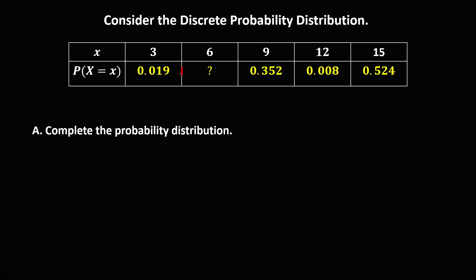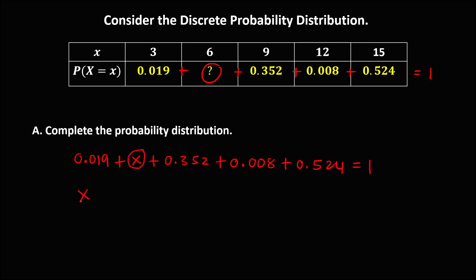Again, the sum of all probabilities is equal to 1. To complete the next distribution, we have: 0.019 plus x plus 0.56 plus 0.352 plus 0.008 plus 0.524 equals 1. We solve for the unknown x.